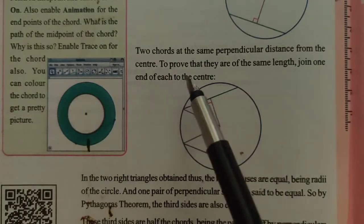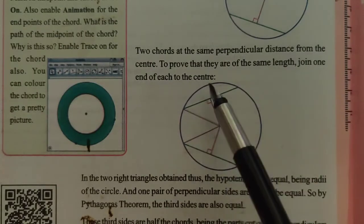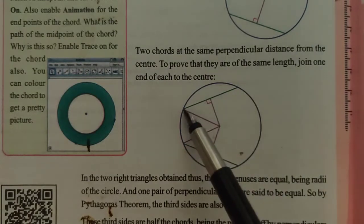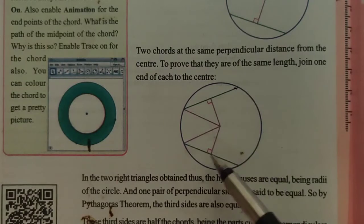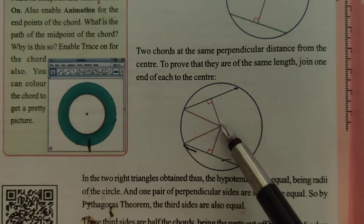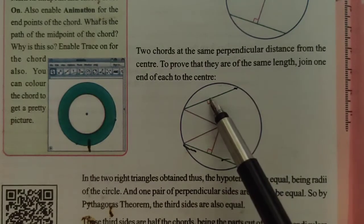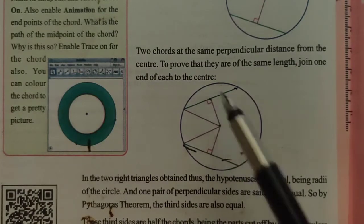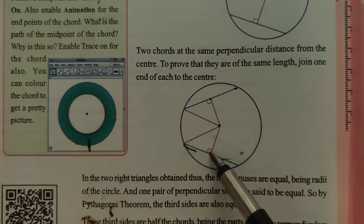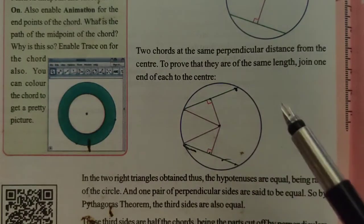Next theorem: two chords at the same perpendicular distance from the center are to be proven to be of the same length. We have two chords here, and given that they have the same perpendicular distance from the center. The center has a perpendicular distance to each chord, and we know that this perpendicular bisects the chord. We want to prove these two chords are equal in length.